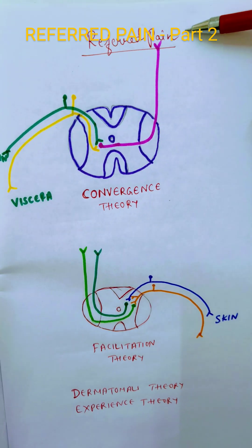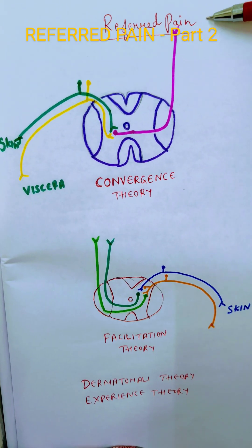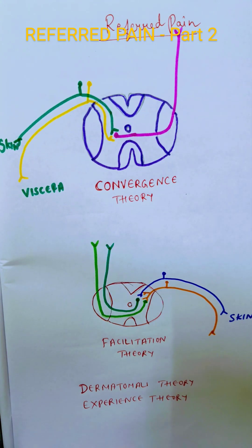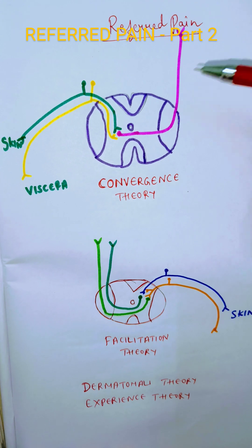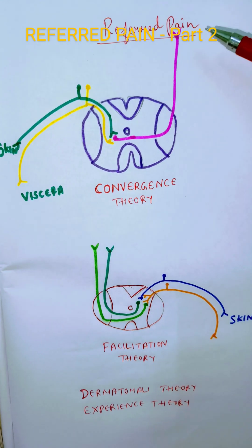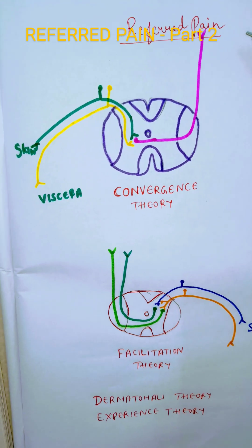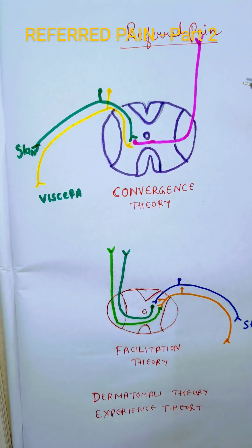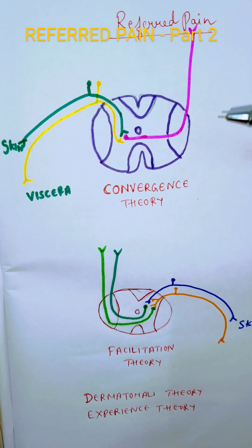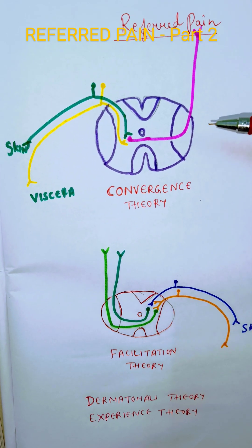Coming on to theories of referred pain — why do we get referred pain? As we saw in the previous video, referred pain is when the injury is in the viscera but the pain is felt in the skin. A classical example would be acute myocardial infarction or heart attack, where the pain is felt in the inner aspect of the left arm. Now, what are the theories that explain referred pain?